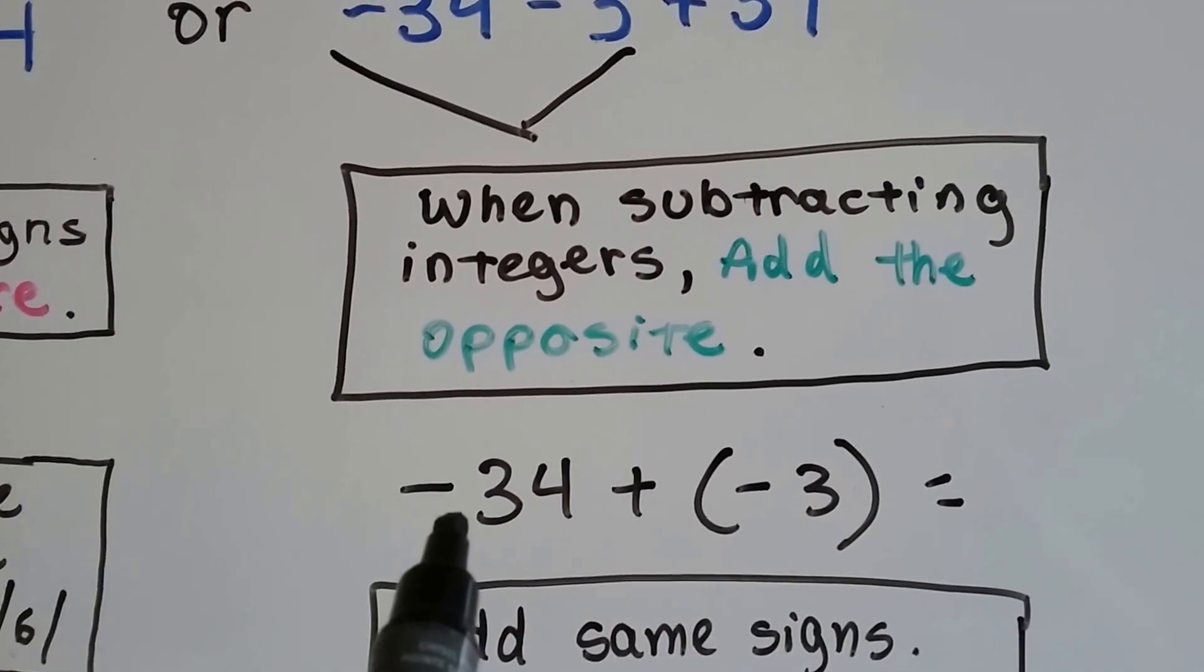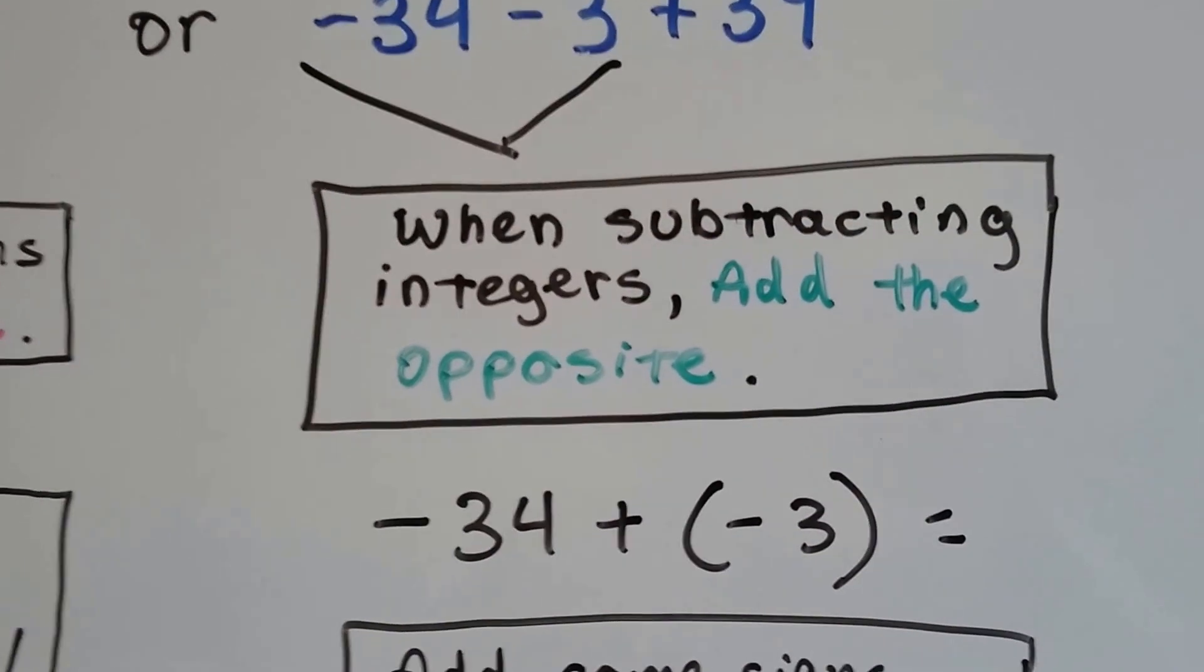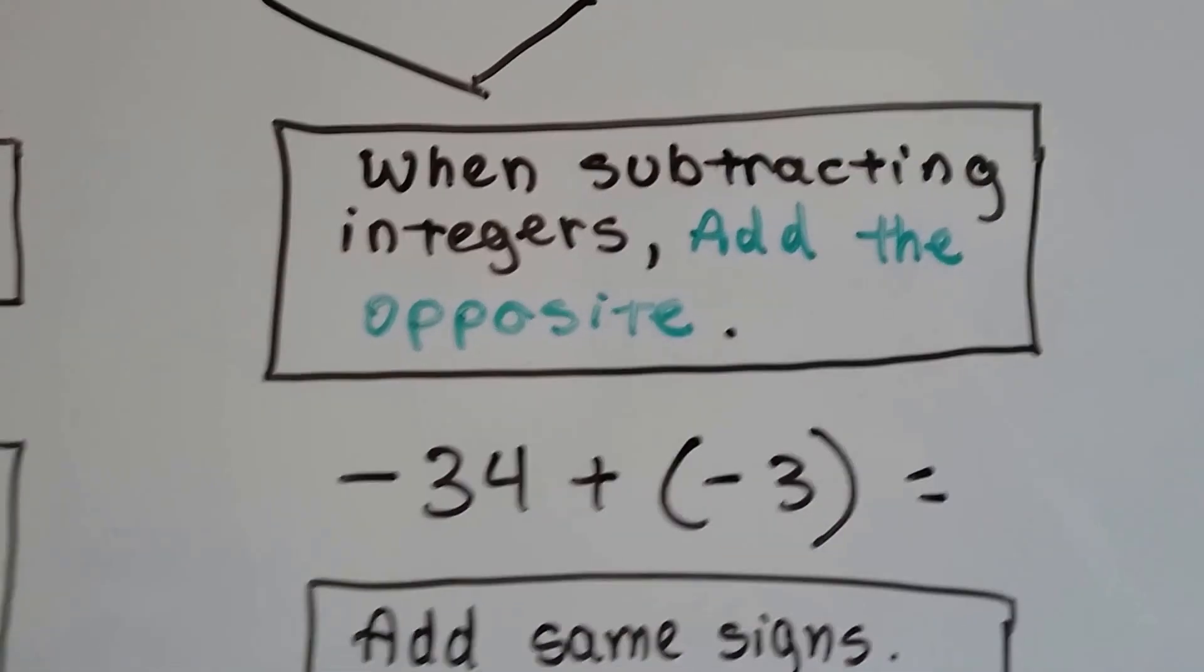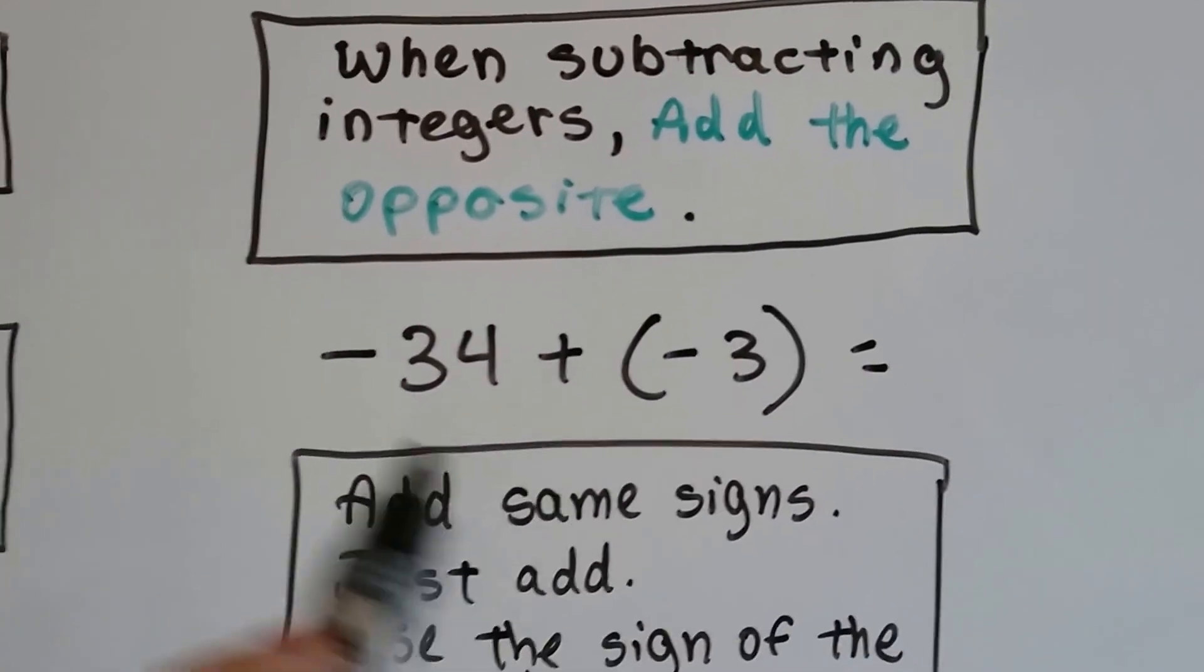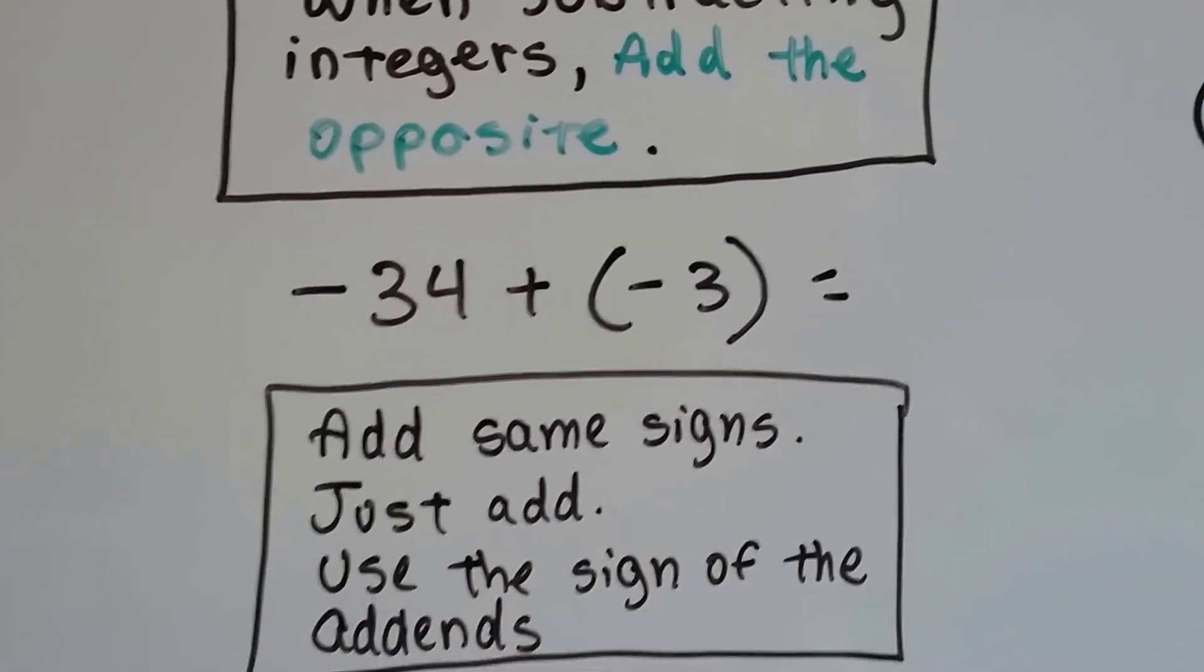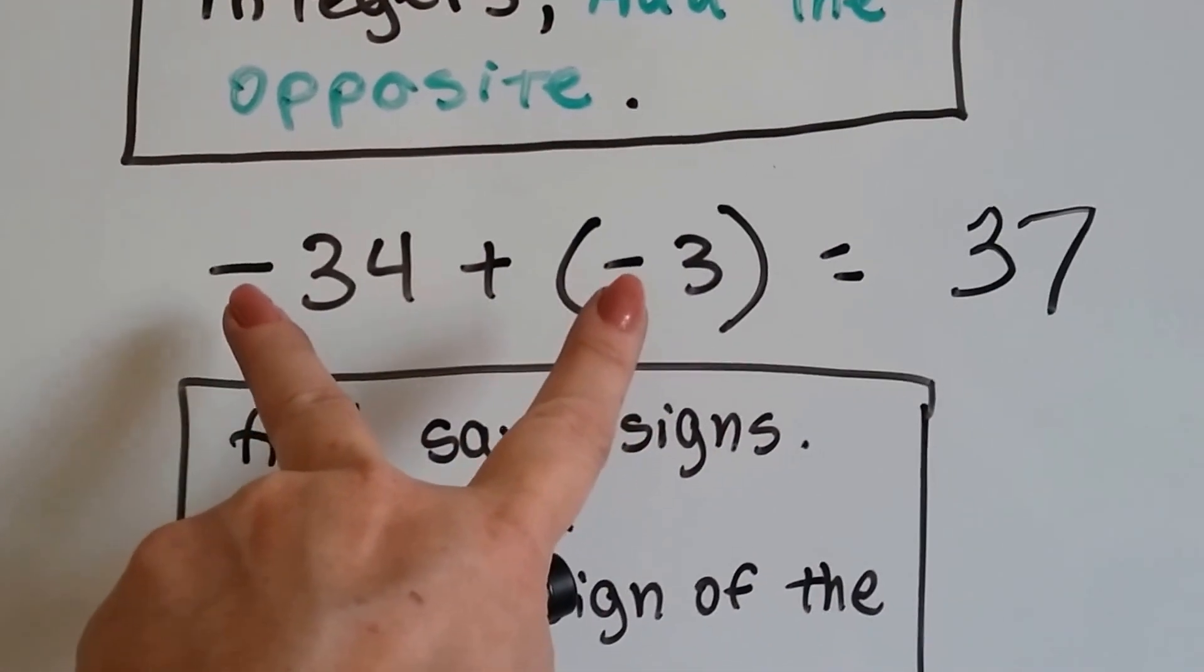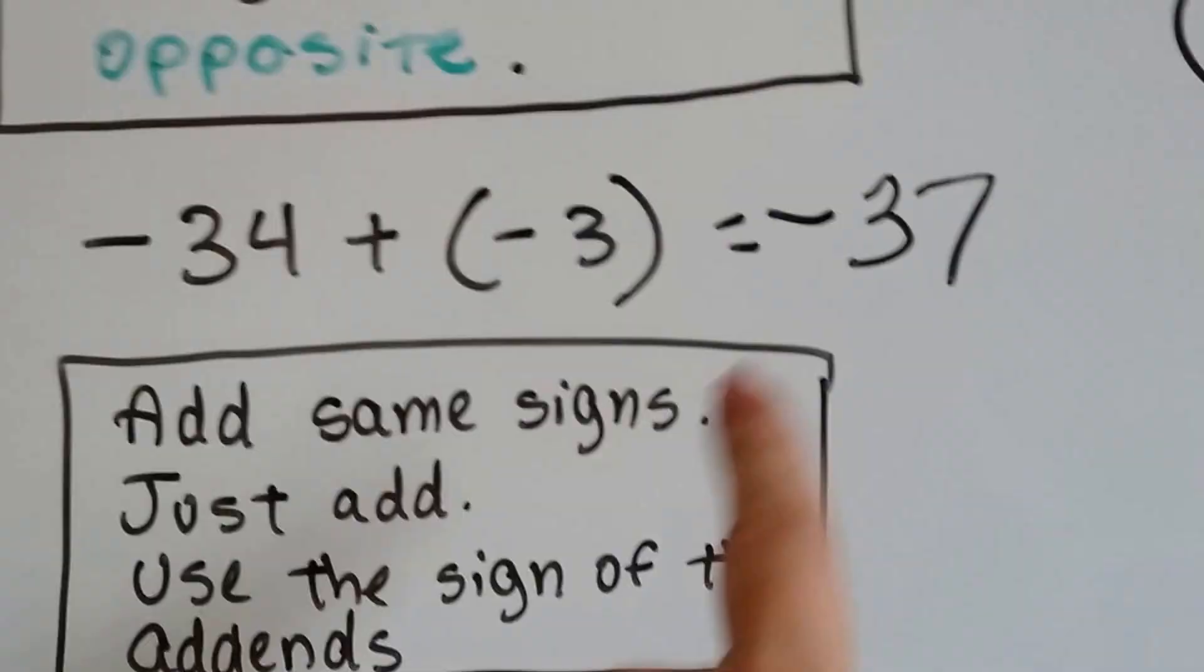So, now we got a negative 34 plus a negative 3. What's negative 34 plus a negative 3? We've got the same sign. So, we just add, don't we? So, a negative 34 and a negative 3. 34 and 3 is 37. So, we got a 37. And, because they have the same sign, we use the sign of the addends. So, it's a negative 37.